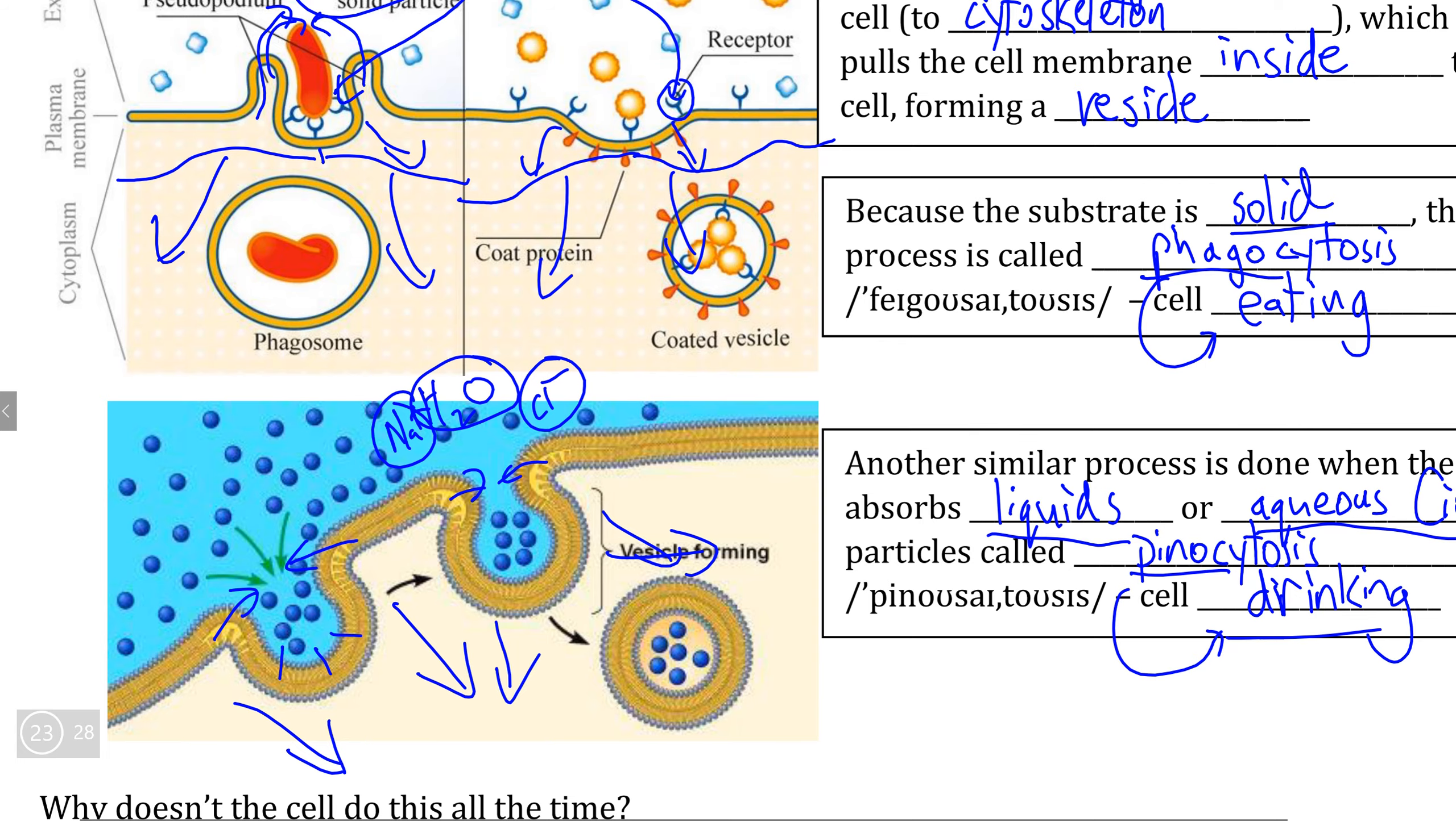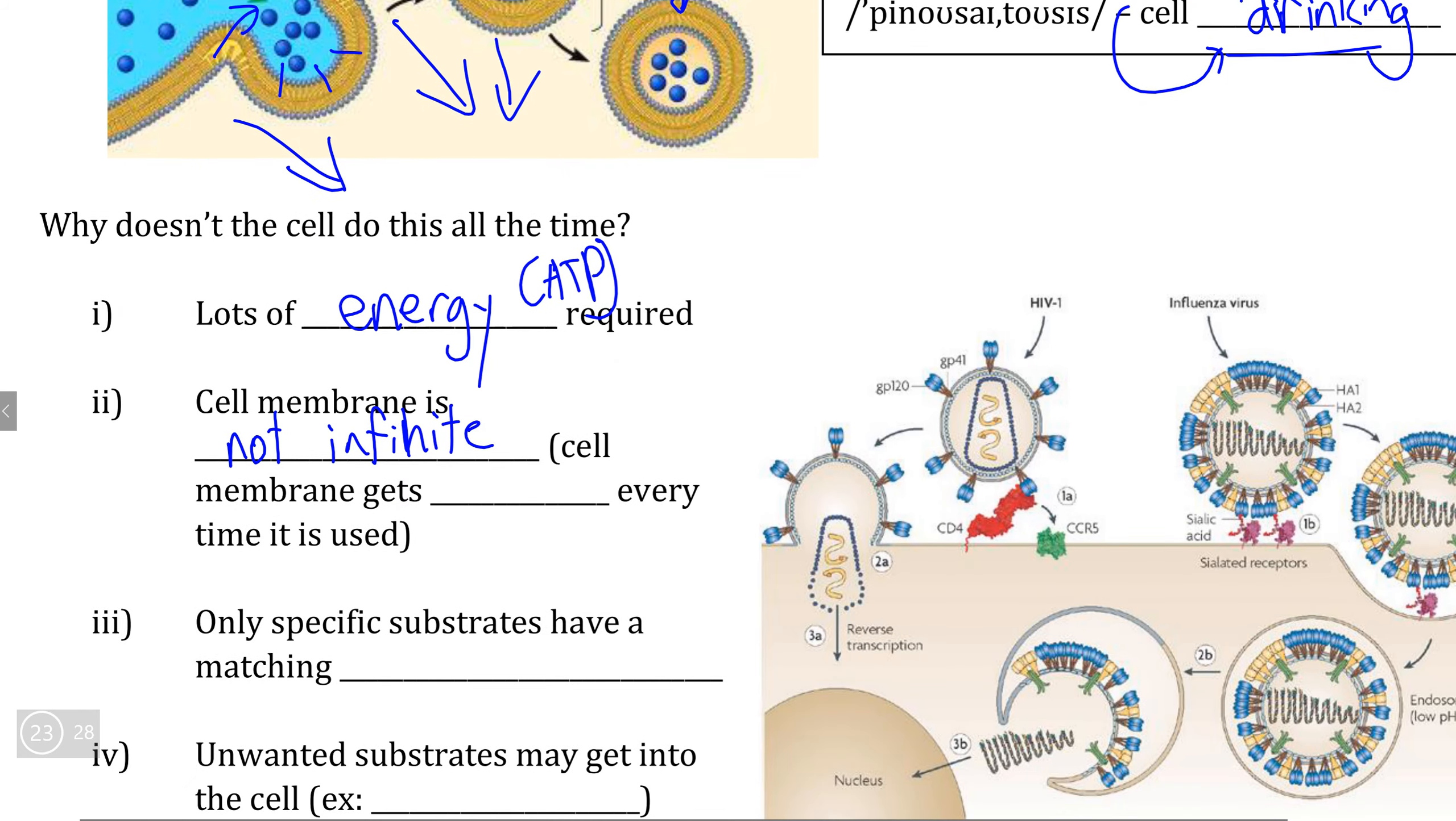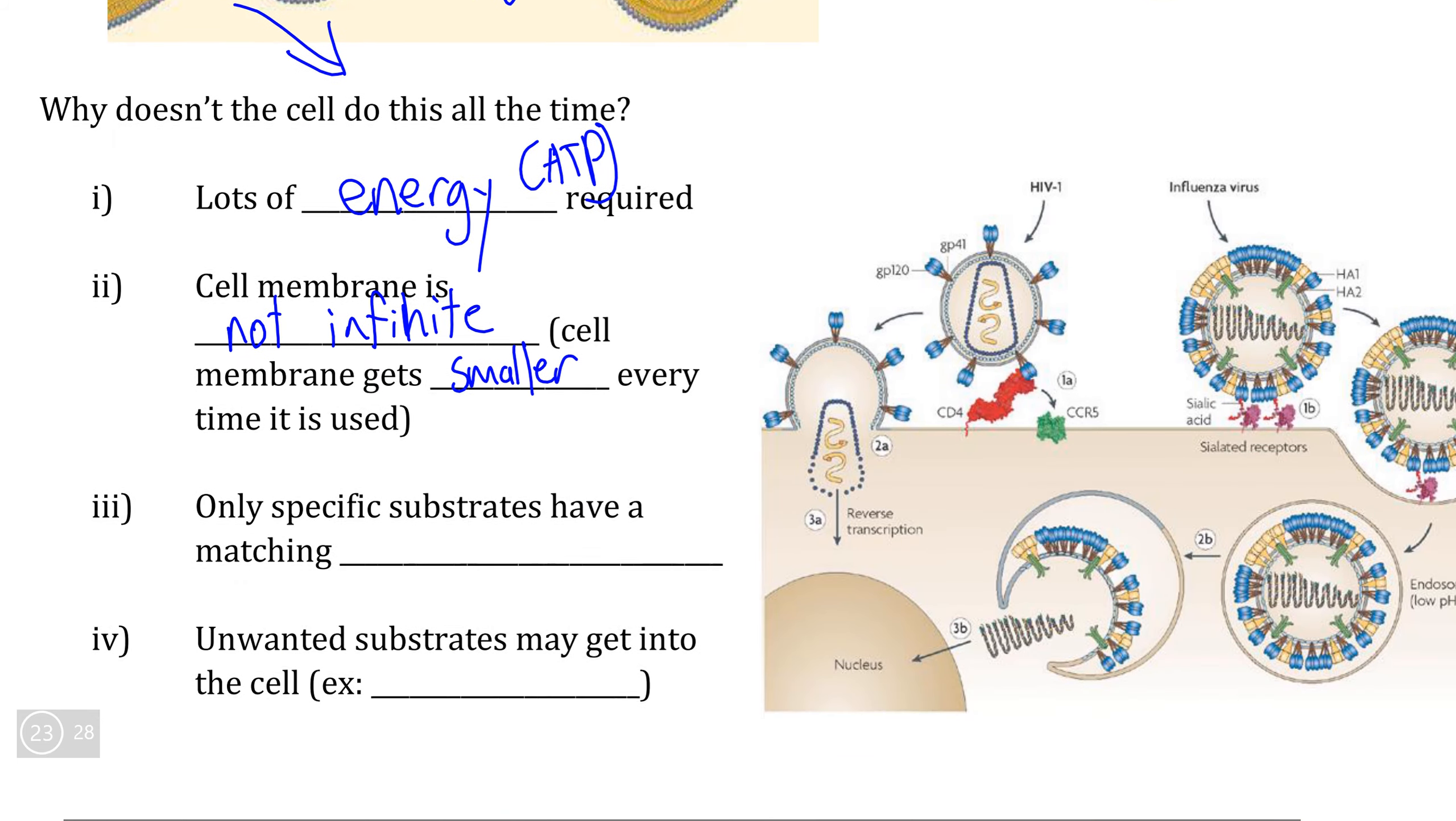every time the cell does phagocytosis or pinocytosis, part of the cell membrane is actually lost in order to produce the vesicle containing the substrate that was pulled into the cell, meaning that every time we do this process, the cell membrane actually gets smaller every single time that this is used, meaning we don't actually have the ability to keep doing this infinitely because the cell membrane will get smaller every single time.